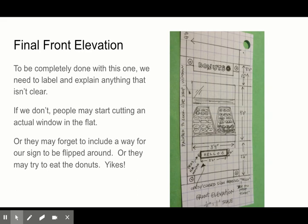Alright, so to be completely done, we have to label everything and make sure that we explain things that aren't perfectly clear. Otherwise, people could start cutting a window in the flat because they think it's meant to be there, or forget that the sign has to get flipped around so there's a front and a back to it. Or, you know, maybe they try to eat the donuts. Oh boy.